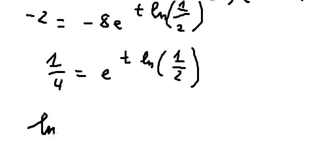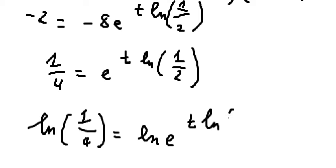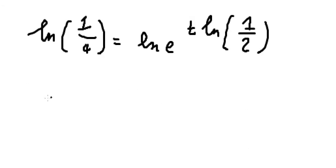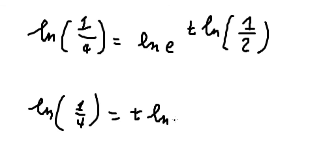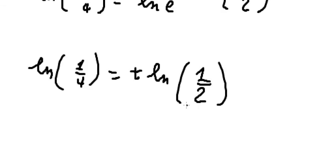Now, we put natural log for both sides. So this one, we have T times LN of 1 over 2. We divide both sides by LN of 1 over 2, and we got the value of T.